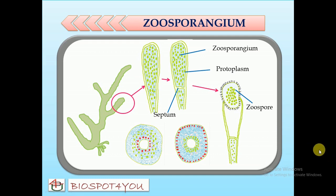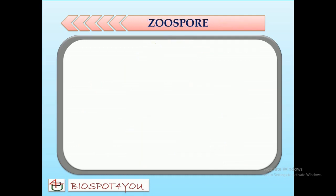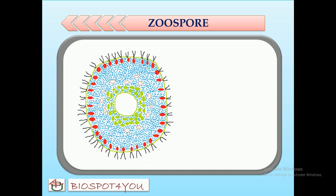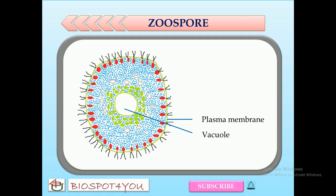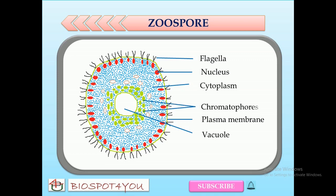The liberation of zoospores usually occurs in the early morning. Mature zoospores are oval in shape and have a yellow-green color. These zoospores have a plasma membrane externally, and at the center we can see a large vacuole. The region between the membrane and the vacuole is the cytoplasm. This cytoplasm has an outermost hyaline region, in which we can see numerous nuclei. Each nucleus is associated with a pair of centrioles, and from each pair of centrioles a pair of flagella arise, which act as the locomotory organs. Internally, the cytoplasm contains numerous chromatophores and contractile vacuoles.